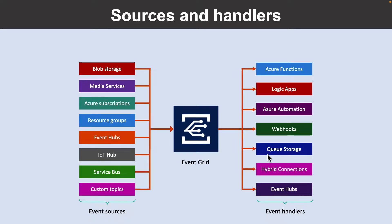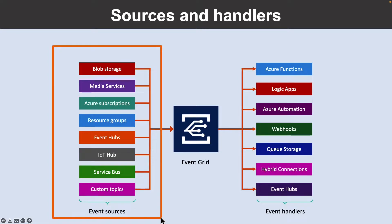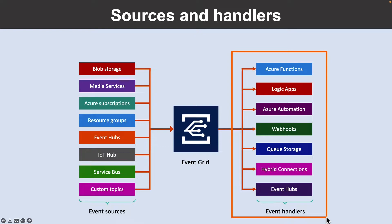Let's look into the sources and handlers. An event source is where the event happens. Several Azure services are automatically configured to send events. You can also create custom applications that send events — custom applications don't need to be hosted in Azure to use Event Grid for event distribution. An event handler is the place where the event is sent. The handler takes some further action to process the event. You can also use any webhook for handling events, and the webhook doesn't need to be hosted in Azure. Event Grid only supports HTTPS webhook endpoints.